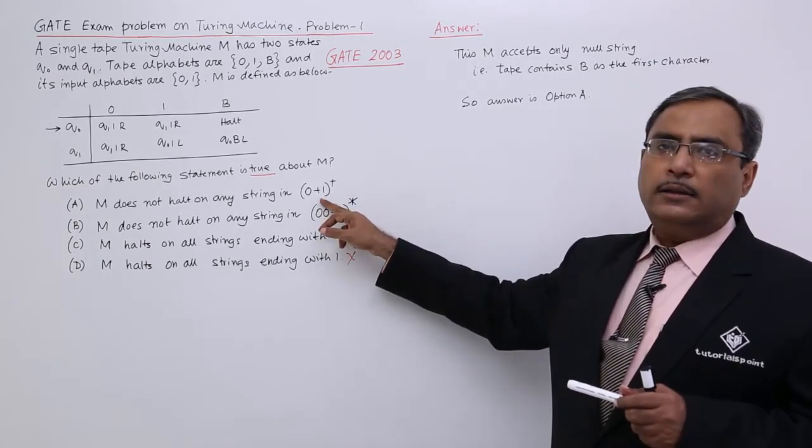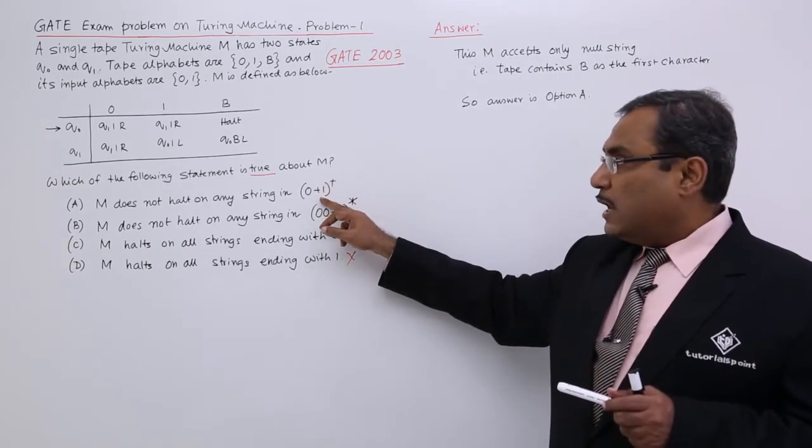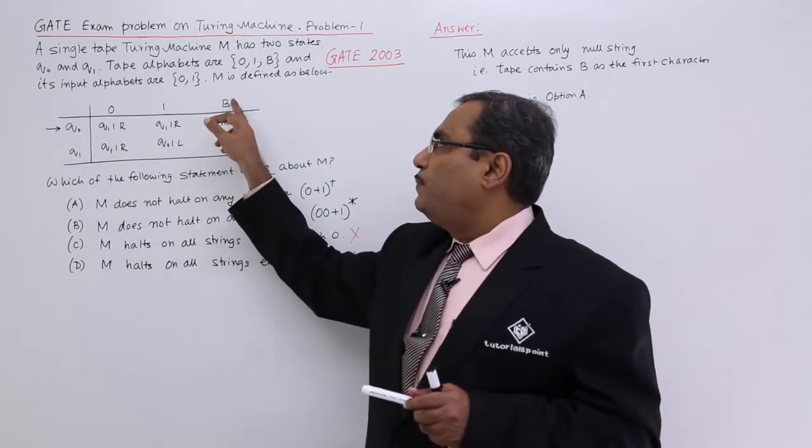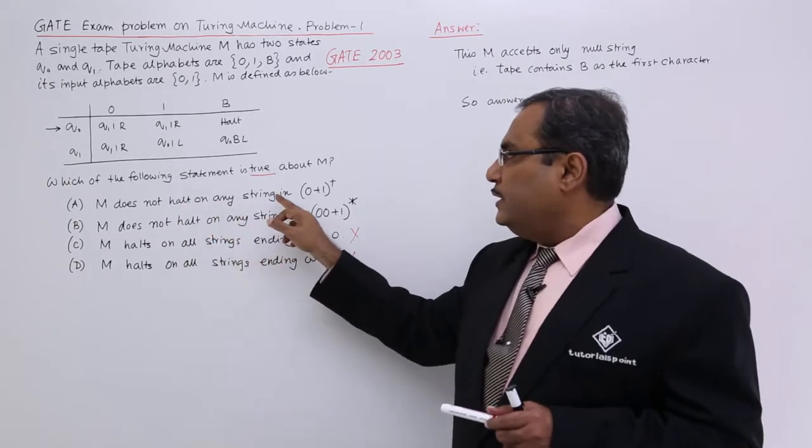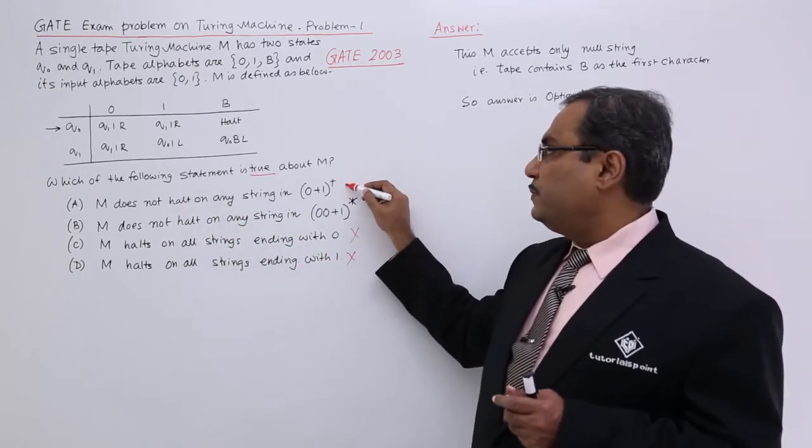It cannot produce any null. As it cannot produce null, Q0 blank will not come. So it does not hold in any string - this particular statement is true.